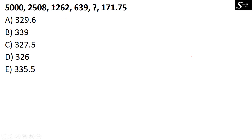Let's check the next question: 5000, 2508, 1262, 639, ?, 171.75. To convert 5000 as 2508: divide 5000 by 2 to get 2500, then add 8 to get 2508. To convert 2508 as 1262: divide by 2 to get 1254, then add 8 to get 1262.